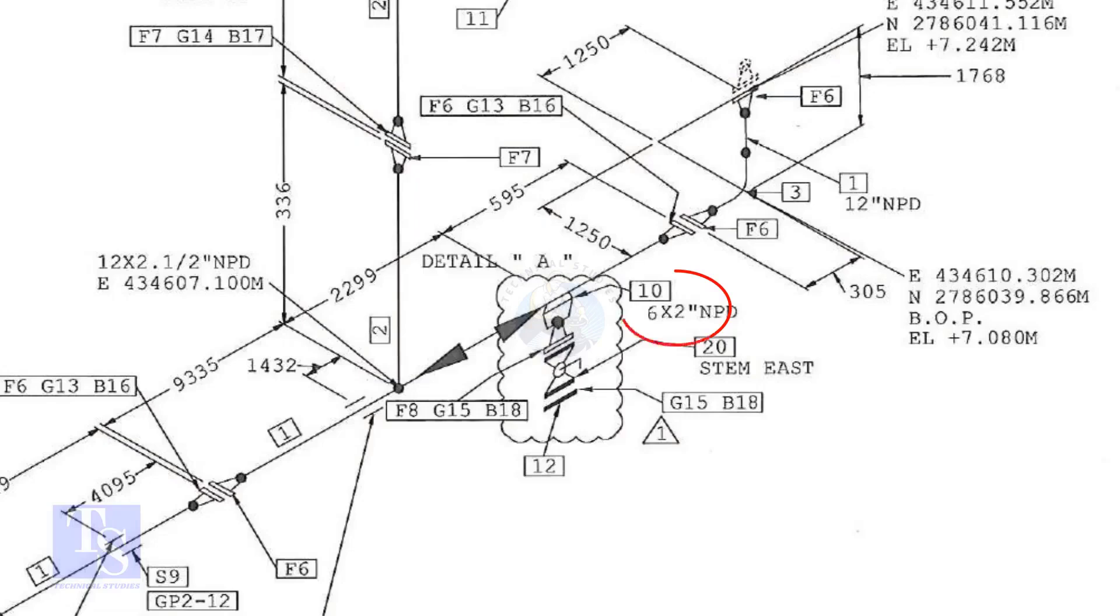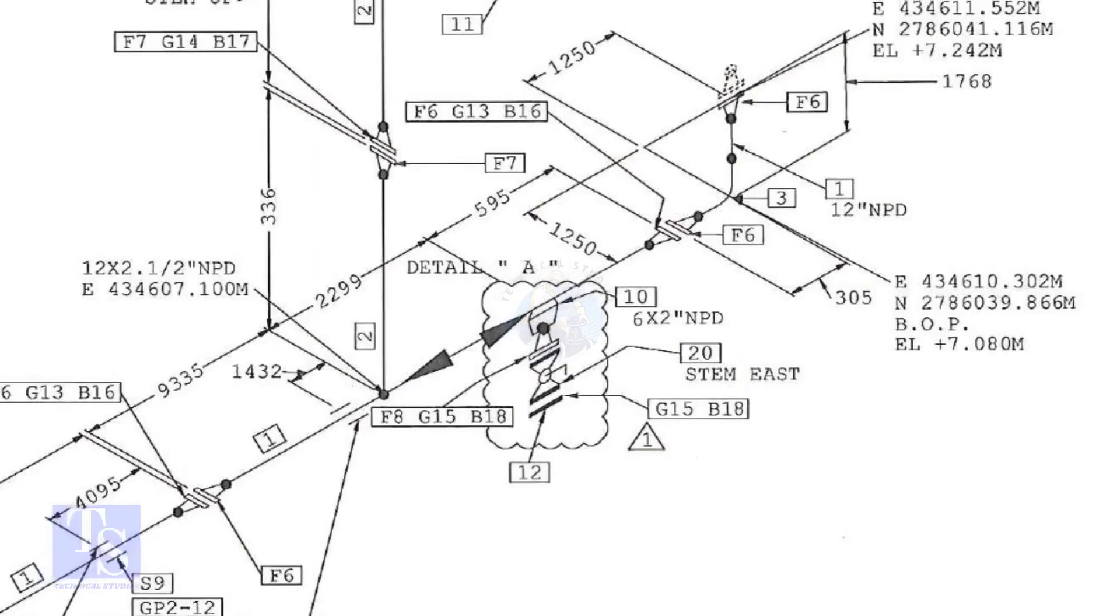In this drawing, the size of the weld-olet is 6 inch into 2 inch. Let us check what is item number 10 in the description.